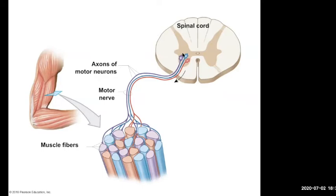Here's the last topic. Purple, blue, red motor neurons — they're leaving the spinal cord. Their axons are going out and innervating the individual muscle fibers within a fascicle region.